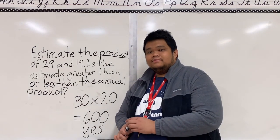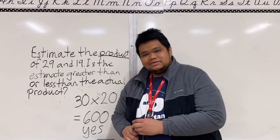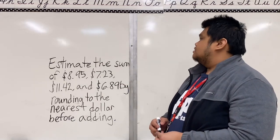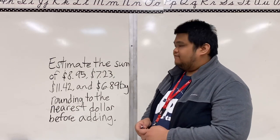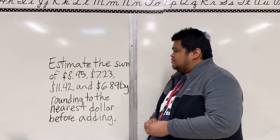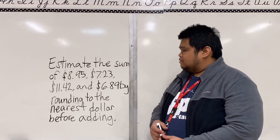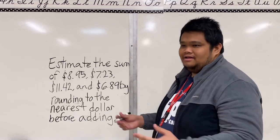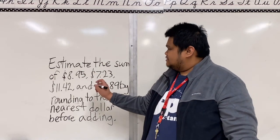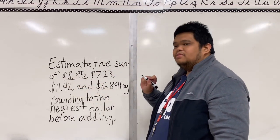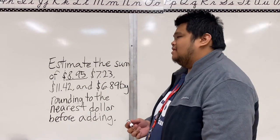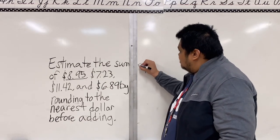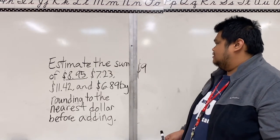Do you have any questions? All good, so I'll proceed to the next question then. All right, example number two. Let me read it for you. Estimate the sum of $8.95, $7.23, $11.42, and $6.89 by rounding to the nearest dollar before adding. This is really easy for us, right class? We know how to do this. So first, 8.95, what is the nearest dollar for 8.95? Yes, you got it right, nine dollars.